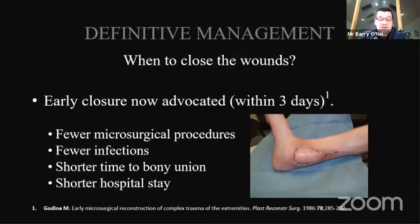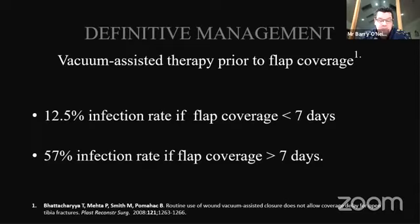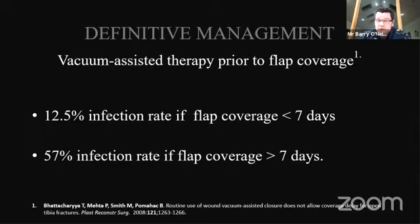Godina's landmark 1986 paper demonstrates that wounds closed with a flap within 72 hours of injury are associated with significantly fewer microsurgical procedures, fewer infections, shorter time to bone union, and shorter hospital stays compared with delayed flap coverage beyond 72 hours. Bhattacharya demonstrated the benefit of VAC therapy in the interim period — showing an infection rate of 12.5% when the vacuum is removed and the wound closed with a flap in less than seven days, but a 57% infection rate if flap coverage occurs after seven days. In my hospital without on-site plastic surgery, my nearest plastic surgeon is two hours away, so I need to get this right first time.